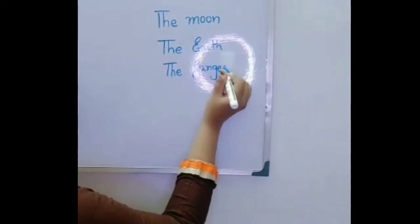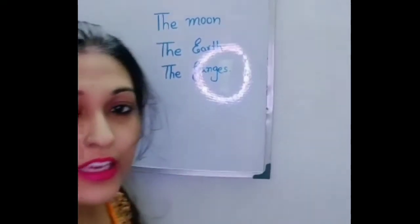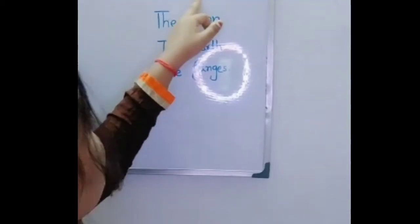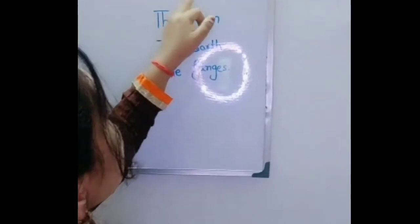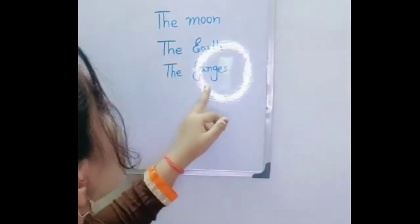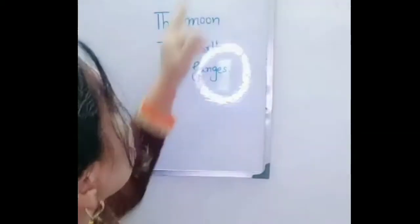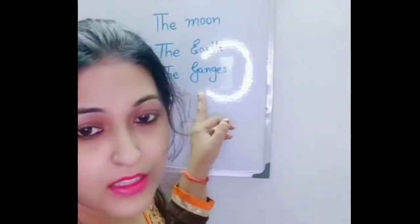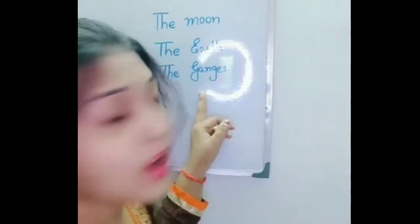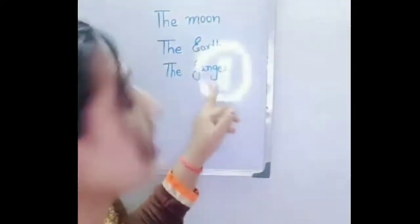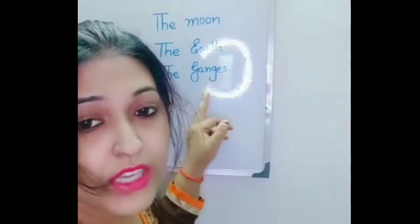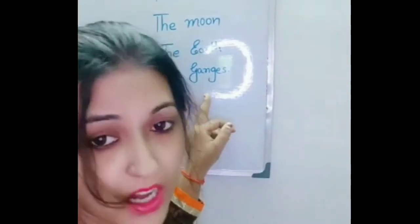Okay children, now you can see that all the objects — that is sun, moon, earth, Ganges — all these objects are one and only. There is no alternate object of sun or moon or earth or Ganges. So here we can use article 'the'.